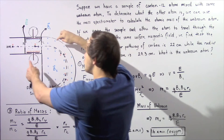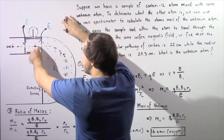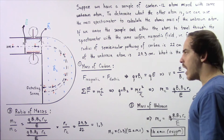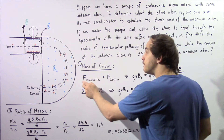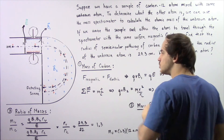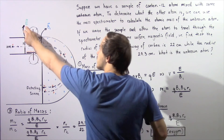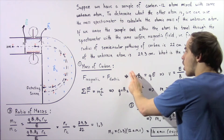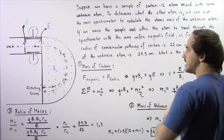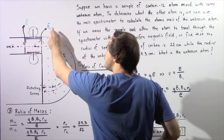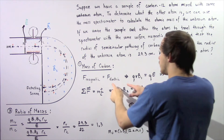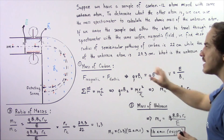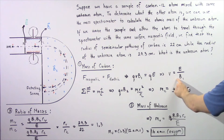Let's begin step one by examining what happens to our carbon atom as it travels through the region with magnetic field B1 and electric field E. From our discussion on the mass spectrometer, we know that the magnitude of the magnetic force in this region equals the magnitude of the electric force. The magnetic force is Q times V times B1, and that equals the electric force Q times E. Solving for velocity, we find V equals E over B1.